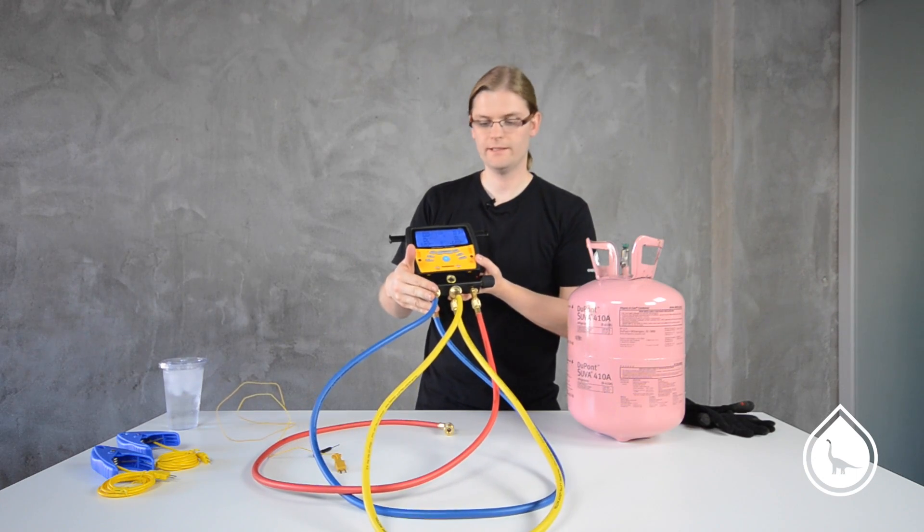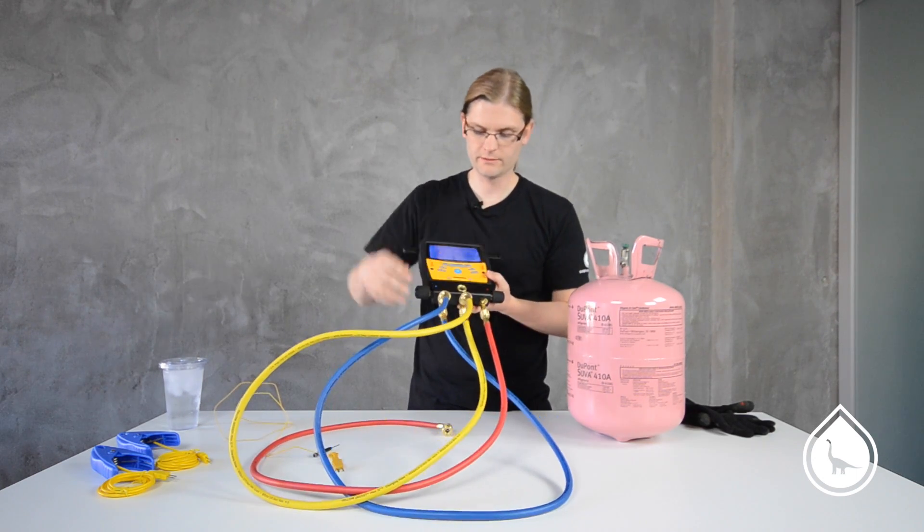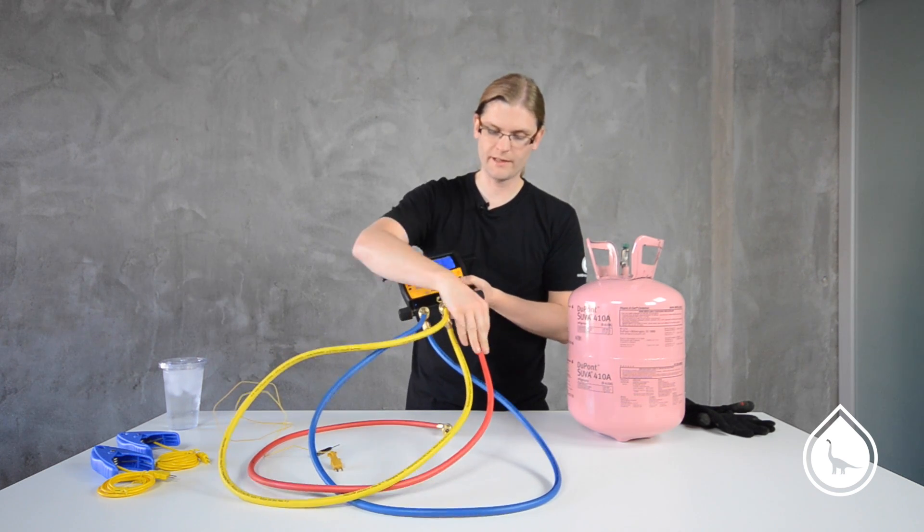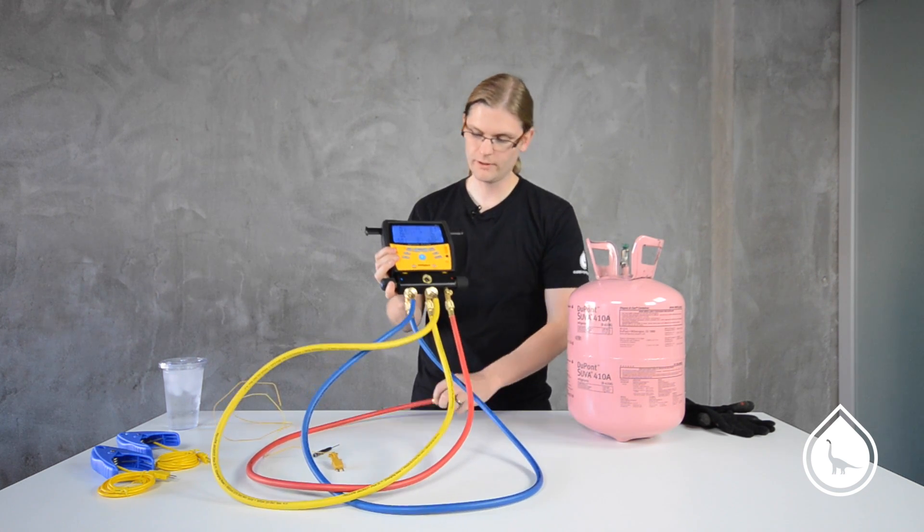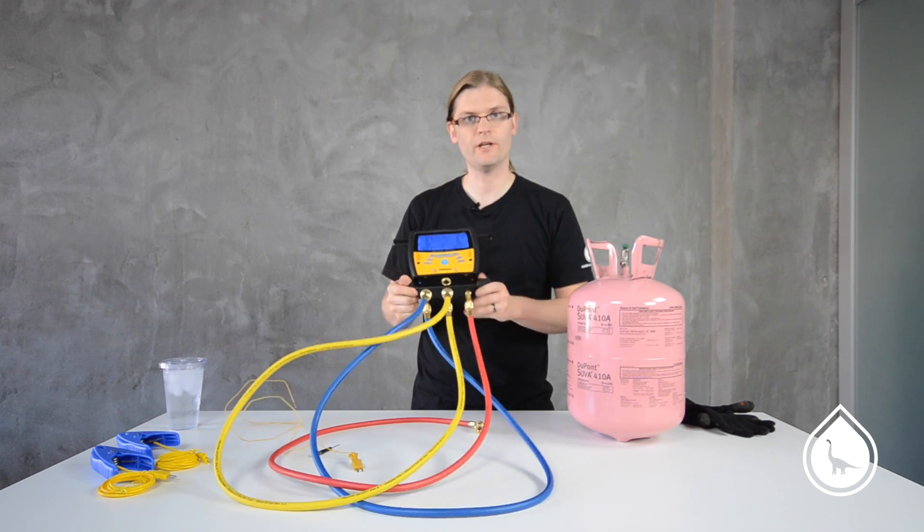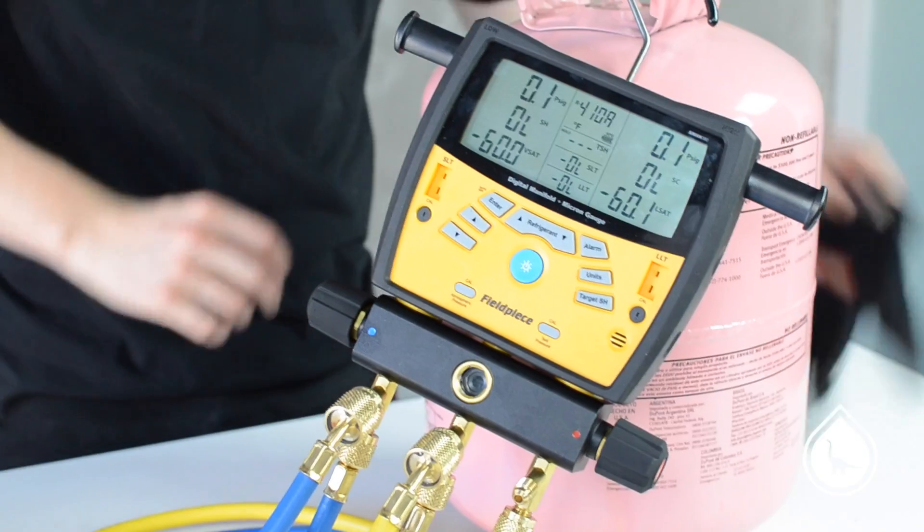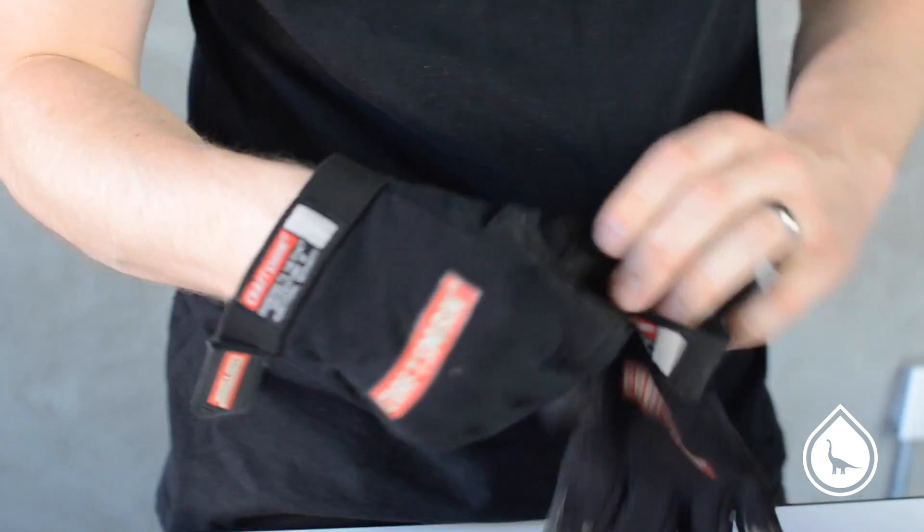I've got my low side connected, top bottom, so it's returning to the manifold. I've got my filling line connected the same way, and I've got my high side with one end on, other end open, going to be connected to our tank. I've also got the manifold open completely so that both pressures should be reading equal. I'll throw my gloves on and get this connected to the tank.